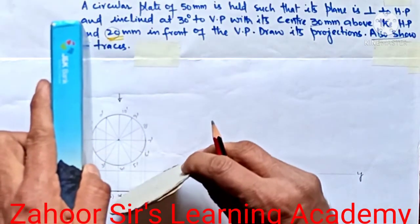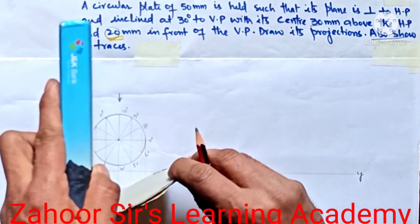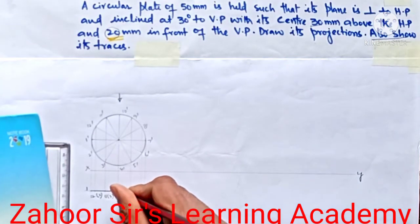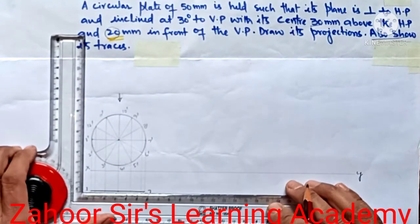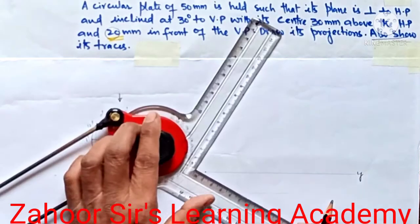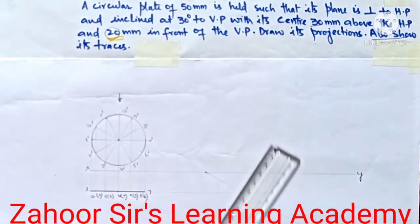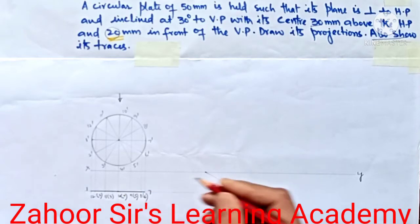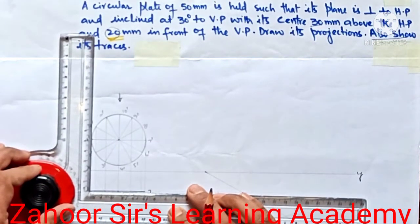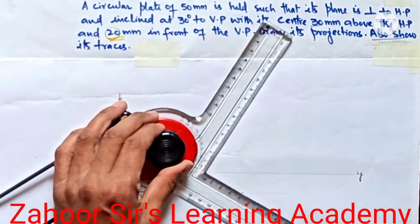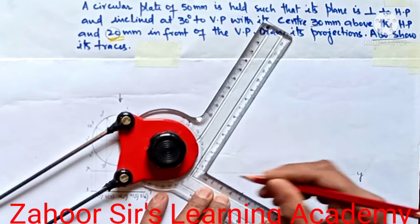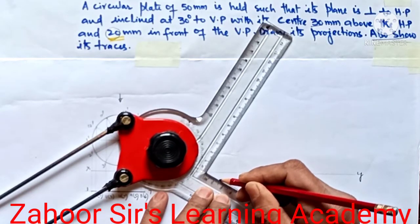Now we give the rotation — we are keeping this circle at an angle of 30 degrees to the VP. I will rotate this line such that the center is 20 mm away from the VP. I extend this line, measure the 30-degree angle, and draw a thin line at 30 degrees. The center is 20 mm away, and I measure the full line — it must be 50 mm. I mark 25 mm on each end from the center.